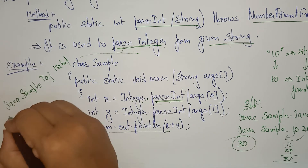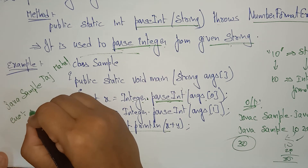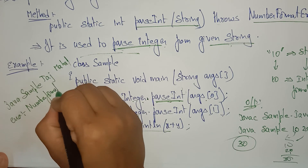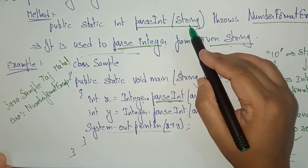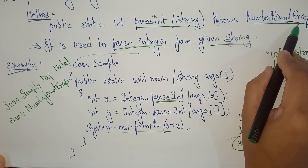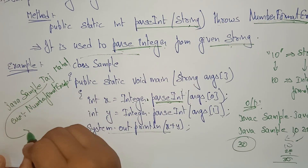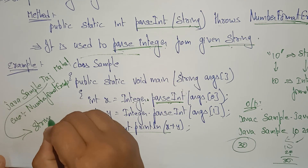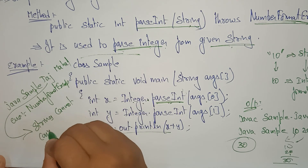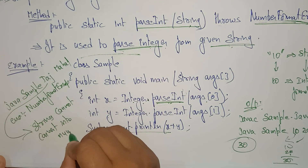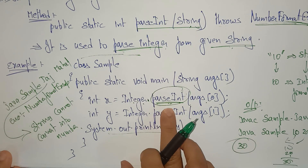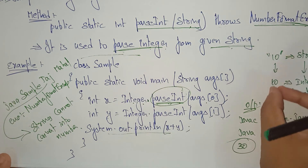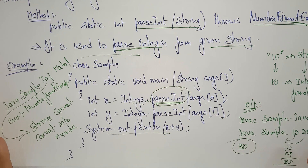If you run java Sample taj mahal, the output will be an error — a NumberFormatException. Because parseInt is converting the passed string to an integer, but 'tajmahal' is alphabetical — it cannot be converted to a number. So parseInt throws NumberFormatException when a non-numeric string is passed.